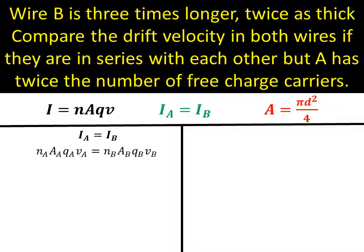The subscript, so the little a, indicates that I'm talking about A. So nA is the number of charge carriers in A. AA is the area of A. QA is the charge on an electron in A, in this case, most likely. And vA is the drift velocity in A. And I'm going to make it equal to B, because IA equals IB.